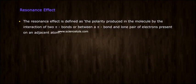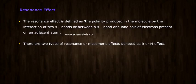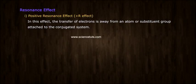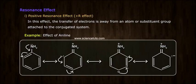Resonance effect. The resonance effect is defined as the polarity produced in the molecule by the interaction of two pi bonds or between a pi bond and lone pair of electrons present on an adjacent atom. There are two types of resonance or mesomeric effects denoted as R or M effect. 1. Positive resonance effect, positive R effect. In this effect, the transfer of electrons is away from an atom or substituent group attached to the conjugated system. Example: Effect of aniline.